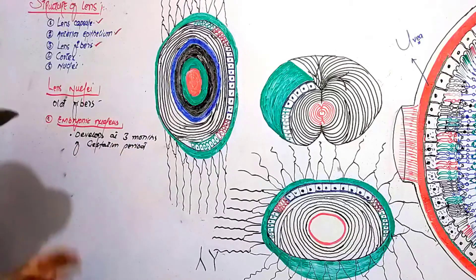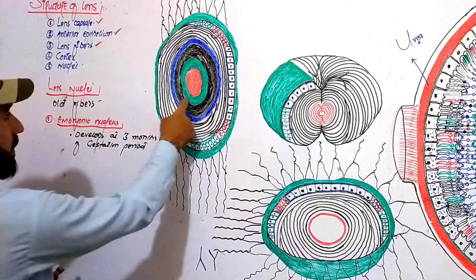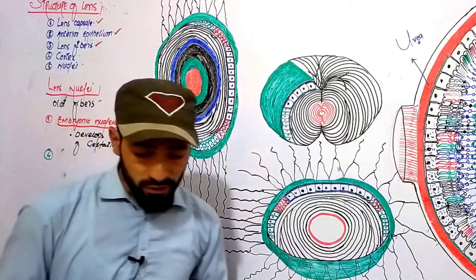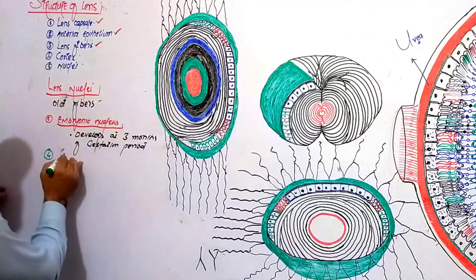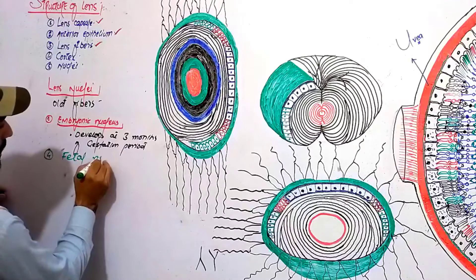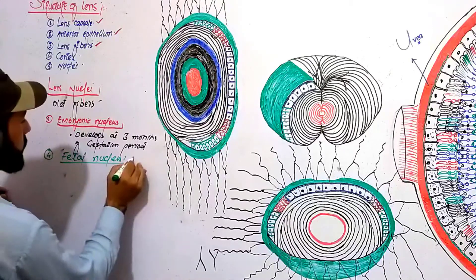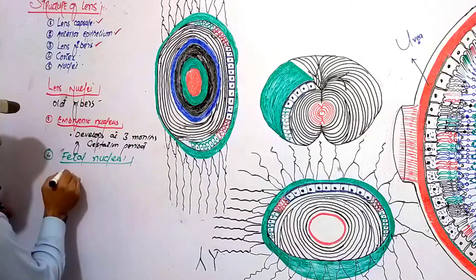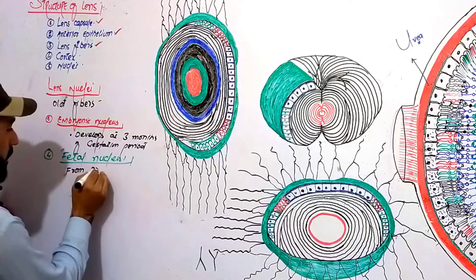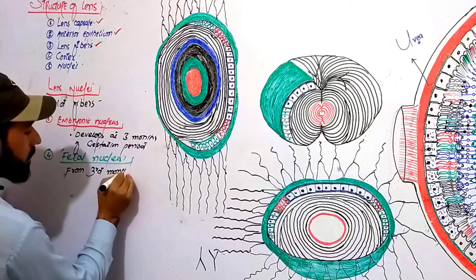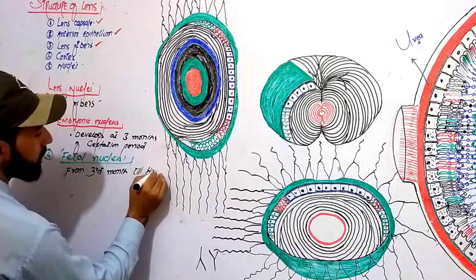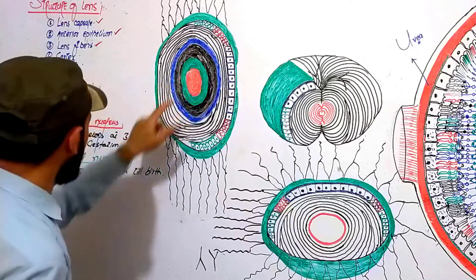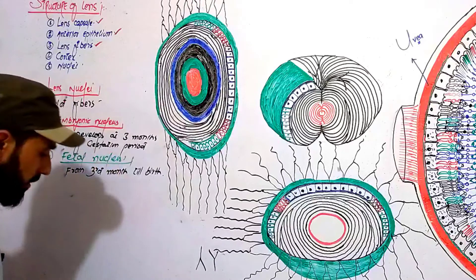Next is the fetal nucleus, shown in green. The fetal nucleus develops from the third month of gestation until birth. By the time the baby is born, the fetal nucleus is fully formed.